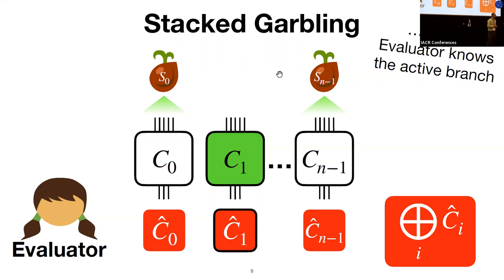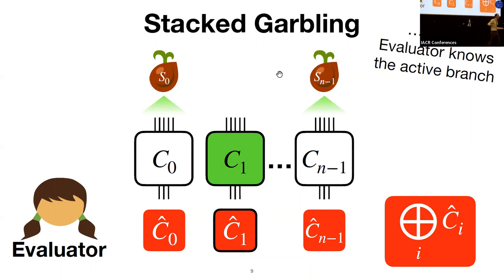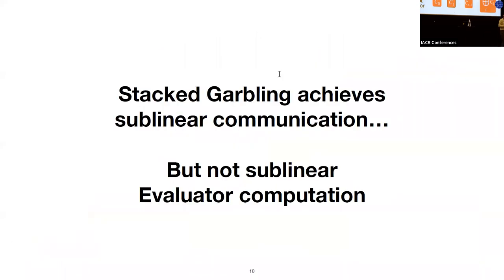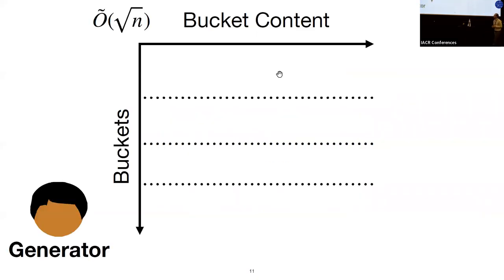This technique achieves sublinear communication but does not achieve sublinear computation for either party. In particular, the evaluator is garbling each of the branches, so she pays linear work in the total size of the circuit to garble and unstack everything.